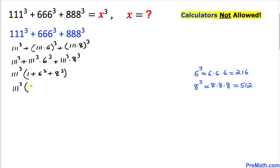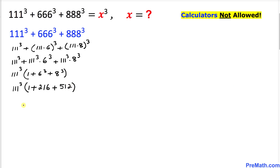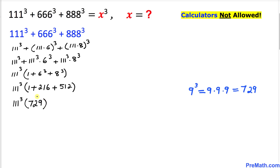Inside the parentheses, 1 plus 6 power 3 is the same as 216, plus 8 power 3 is the same as 512. So this could be written as 111 power 3 times — adding all these numbers gives us 729. We know that 729 can be written as 9 power 3.